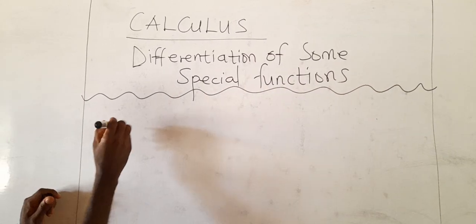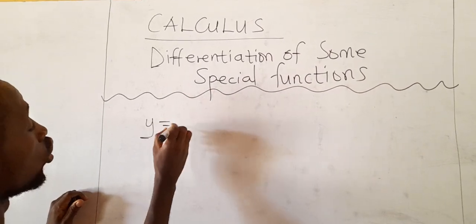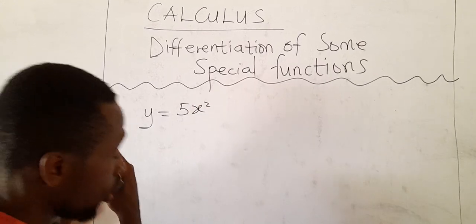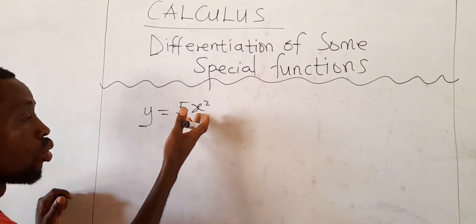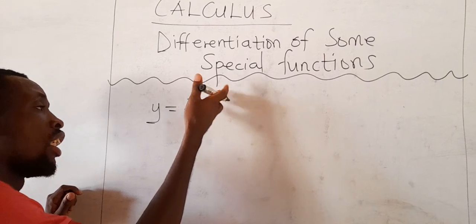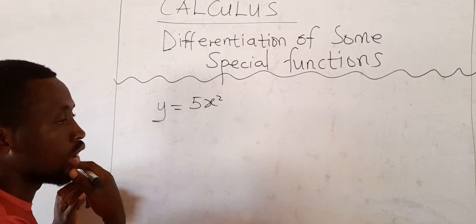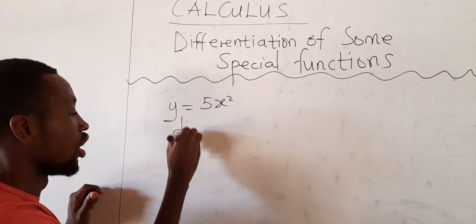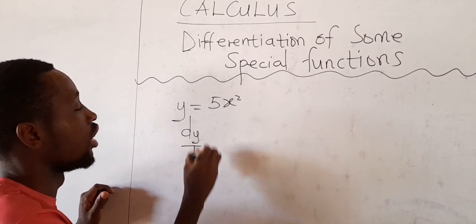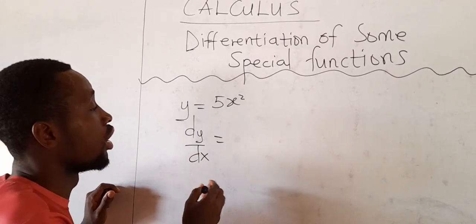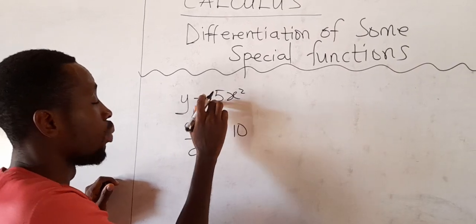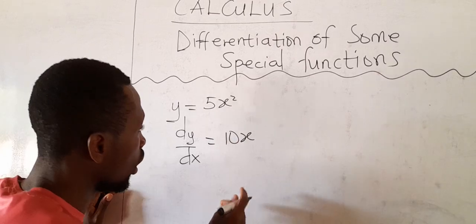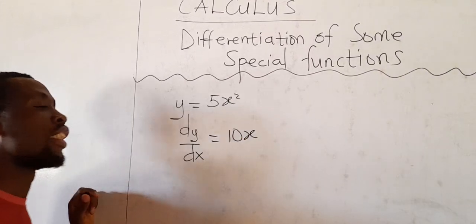The normal function we know is maybe y equal to 5x squared. We can see that the variable is being exponentiated by a constant — that is the normal thing we know, and we know we can easily differentiate this. We say dy/dx: drop the exponent down, multiply the coefficient of the variable, and subtract one from the exponent. So the differentiation of this is 10x.